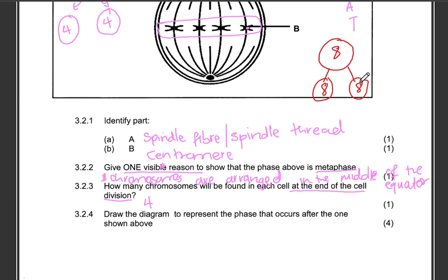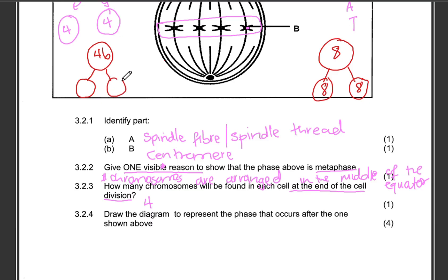Mitosis takes place in our cells. For us human beings, each cell consists of 46 chromosomes. So when a cell in our bodies undergoes mitosis, this cell containing 46 chromosomes will divide to form 2 cells, and each of those 2 cells will also contain 46 chromosomes. The chromosome number is maintained.